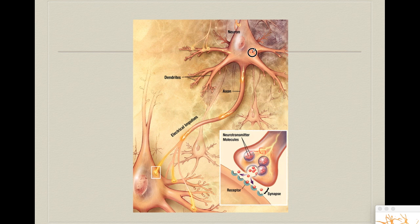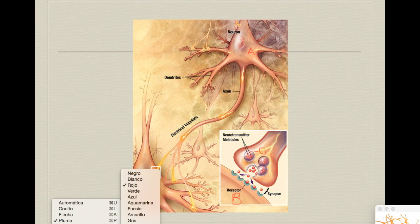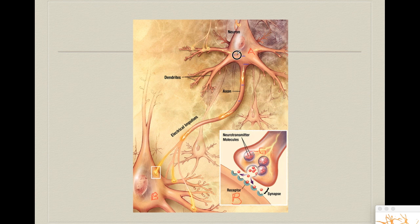We want glutamate to be released only when we want to excite another neuron. So only when neuron A wants to send a signal to neuron B do we want glutamate to be released. We couple glutamate release into the synaptic cleft — the little space between one neuron and the other — to activate neuron B, synchronized with the activity of neuron A through something called an action potential.